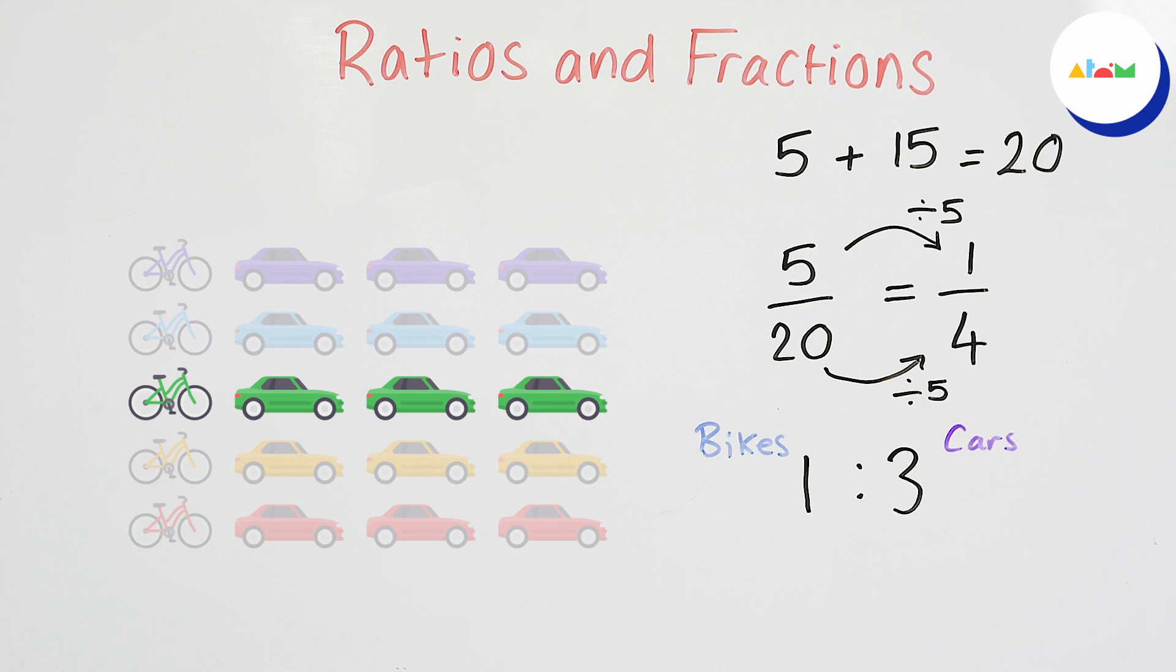To go from a ratio to a fraction we add together both sides of the ratio to get the denominator of the fraction. One plus three equals four. Then we choose whichever side of the ratio we need depending on which quantity we're trying to describe to express the numerator.